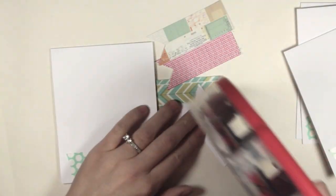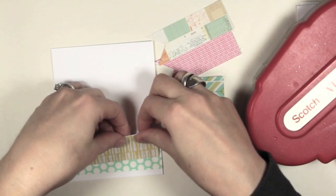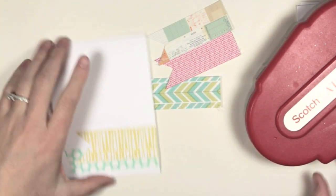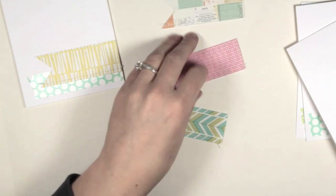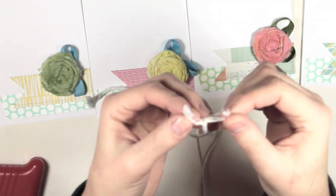I've cut little flags out of four different pieces of patterned paper found in the kit. I used my sewing machine to stitch a bottom border to add texture. I'm adhering those pieces of paper over the washi tape.